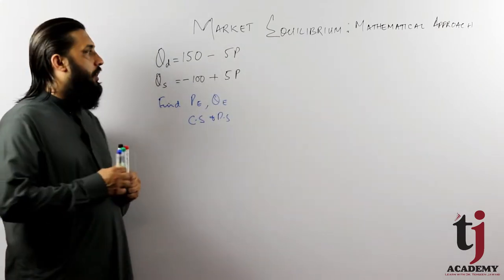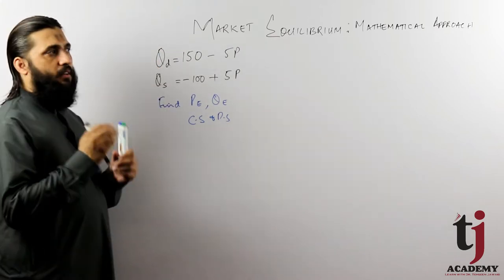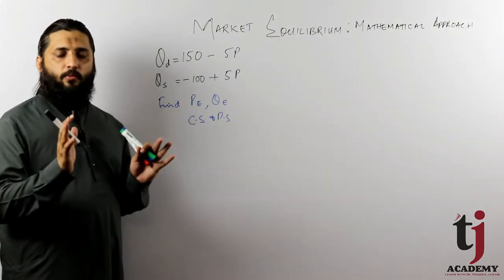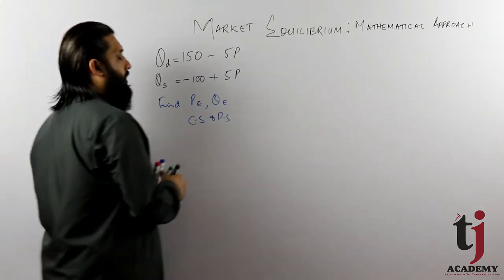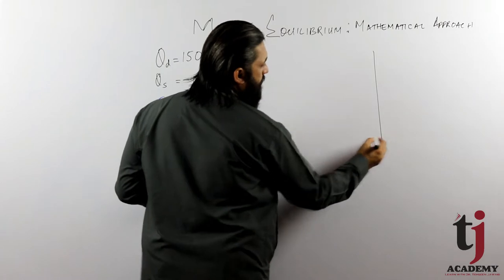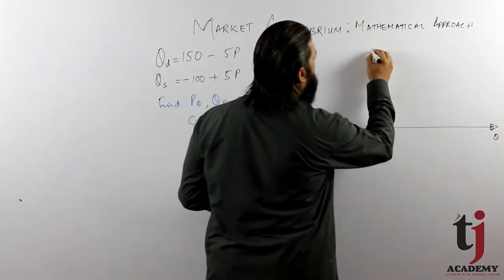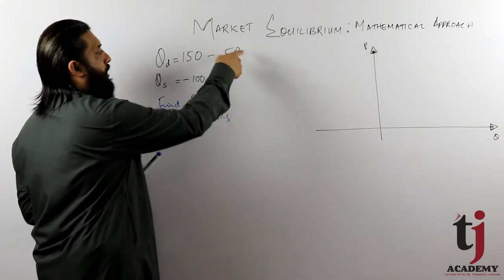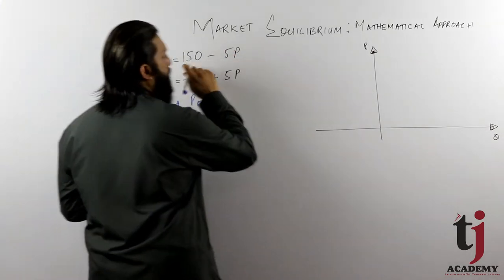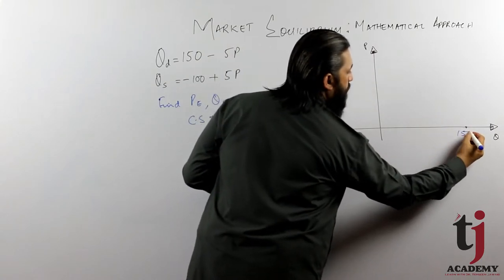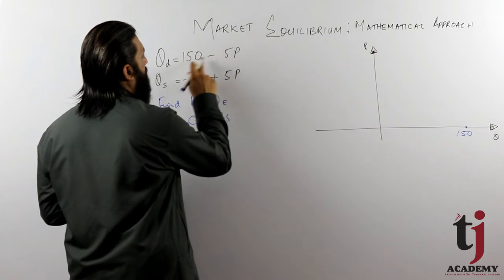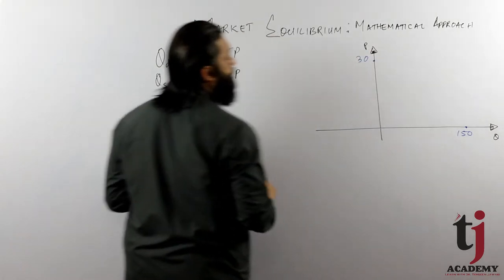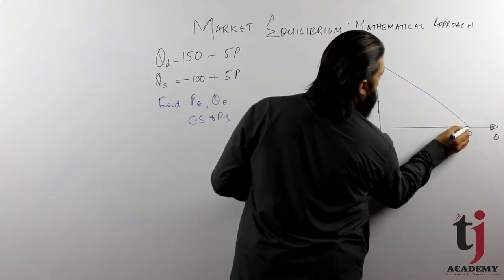These four things we find from two functions. The mathematical equation is the easiest way to draw the curves. If quantity is zero, then price will be 30. So if you have these points, you can draw the demand curve.